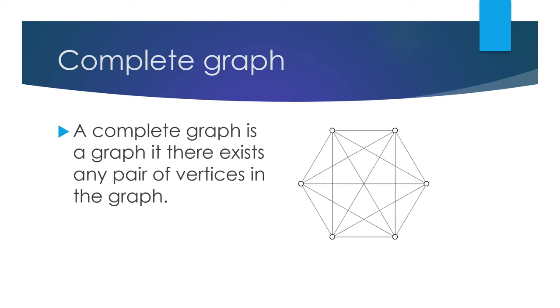Complete graph. A complete graph is a graph where there exists an edge between any pair of vertices. Here all the nodes are connected to each other. So this is known as a complete graph.